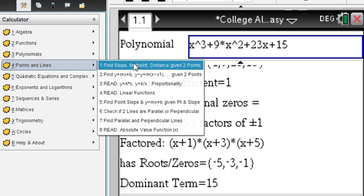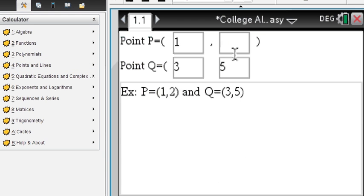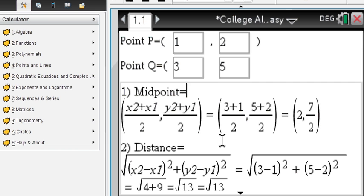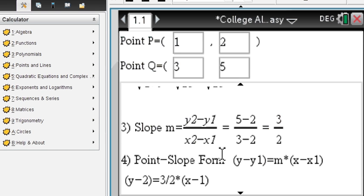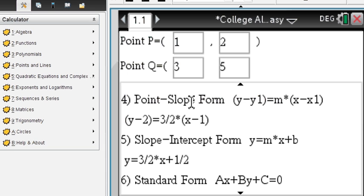Points and lines. Say you are given two points. You can immediately find midpoint, distance, slope, step by step. And also the equations of a straight line passing through these two points.